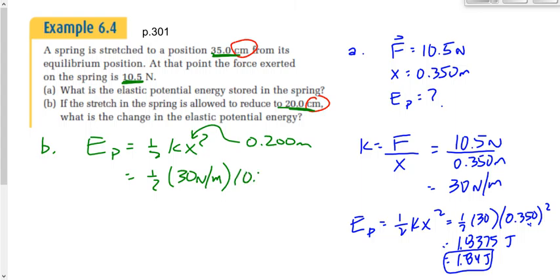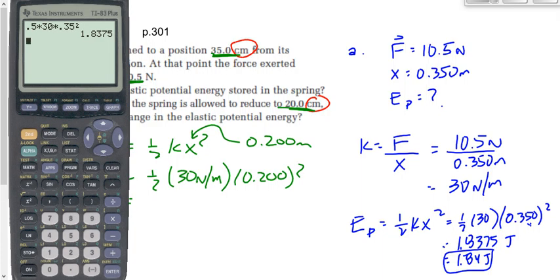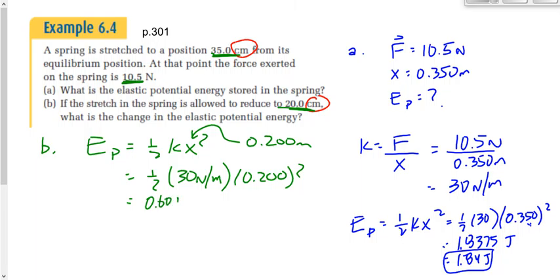With x equal to 0.200 meters: 0.5 times 30 times 0.2 squared gives 0.6 joules. Subtracting the initial value: 0.6 minus 1.8375 gives us a change in elastic potential energy of negative 1.24 joules.